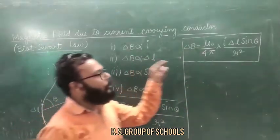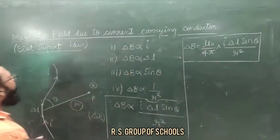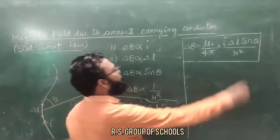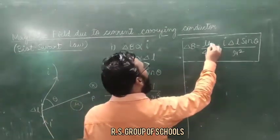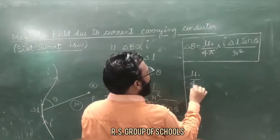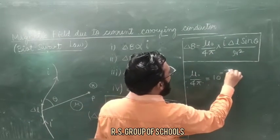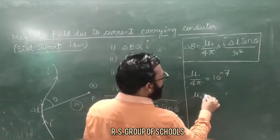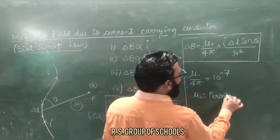Using this formula, we can find the magnetic field produced by an extended conductor. So delta B equals mu naught upon 4 pi multiplied by I delta L sine theta upon R squared. Here mu naught upon 4 pi is equal to 10 raised to the power minus 7. Mu naught is called the permeability of free space.